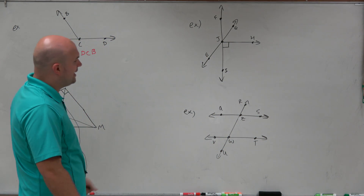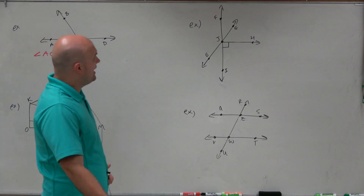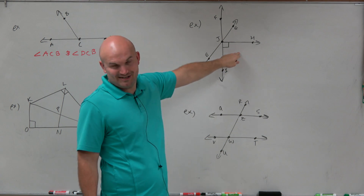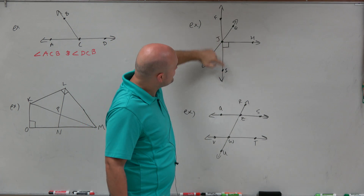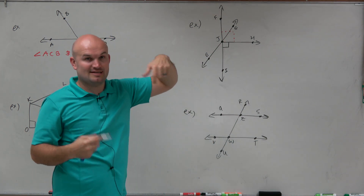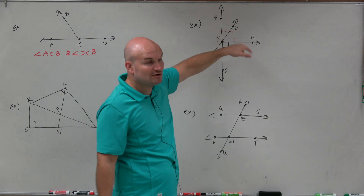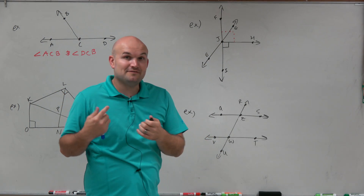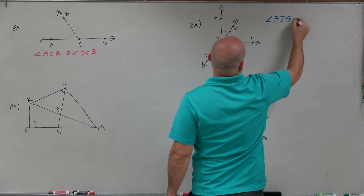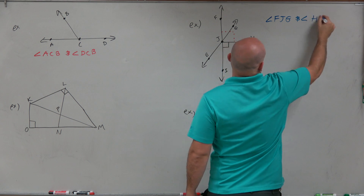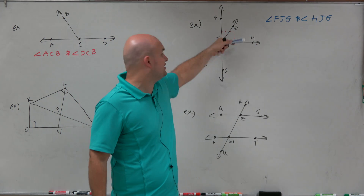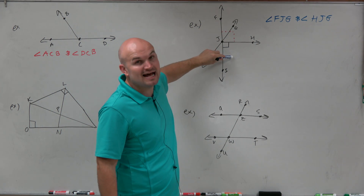Let's go to the next example. You can see here now I have a box — that's 90 degrees. But I don't have two angles that add up to giving me that 90 degrees. However, since I have a straight line, if this is 90 degrees, that means this over here also has to be 90 degrees. And I have two angles that form that 90-degree angle. So I have two angles that are complementary: angle FJG and angle HJG are going to be complementary, because the sum of those two angles adds up to 90 degrees.